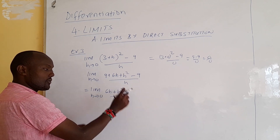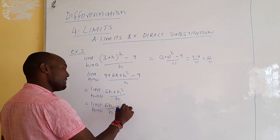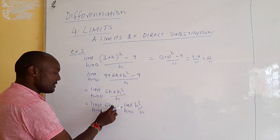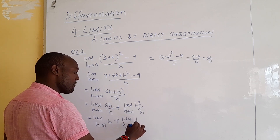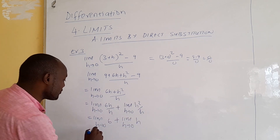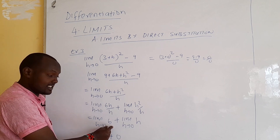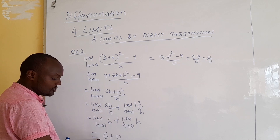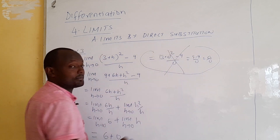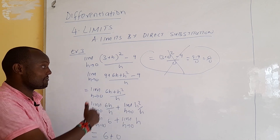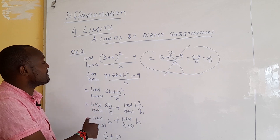Now we can split: limit as h→0 of (6h/h) plus limit as h→0 of (h²/h). The first simplifies to 6, and the second becomes the limit as h→0 of h. Since the limit as h approaches 0 of h is just 0, we get 6 + 0 = 6. So by expanding first, we were able to solve this limit. We could not solve it directly — we needed algebra first.